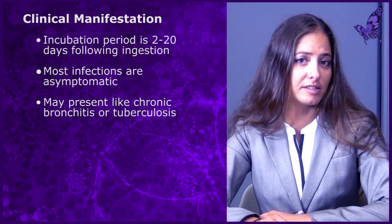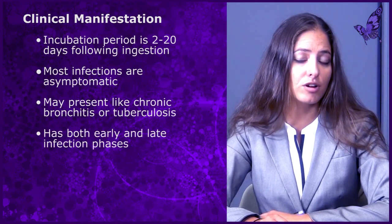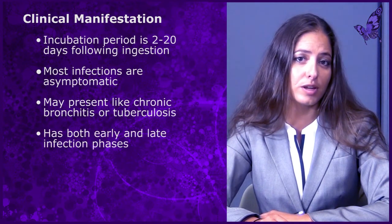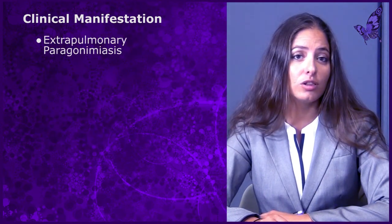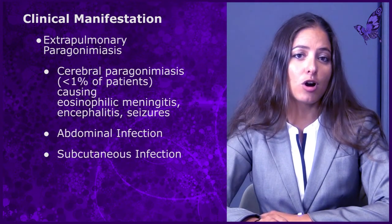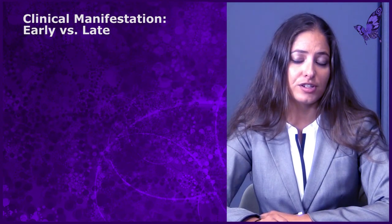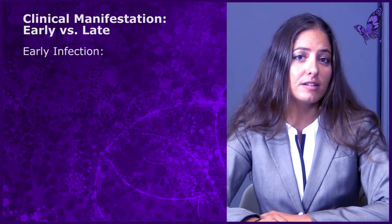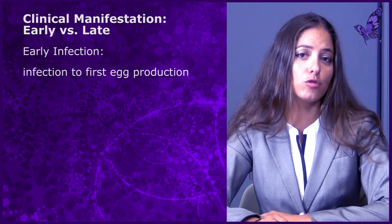Symptomatic cases may initially present similar to chronic bronchitis or active tuberculosis. There are two phases of lung fluke infection: early and late. In addition, lung flukes can migrate from the lungs and cause infection elsewhere — this is called extra-pulmonary paragonomiasis. Early phase infection describes the stage from the onset of infection to the production of the first egg in the human host.